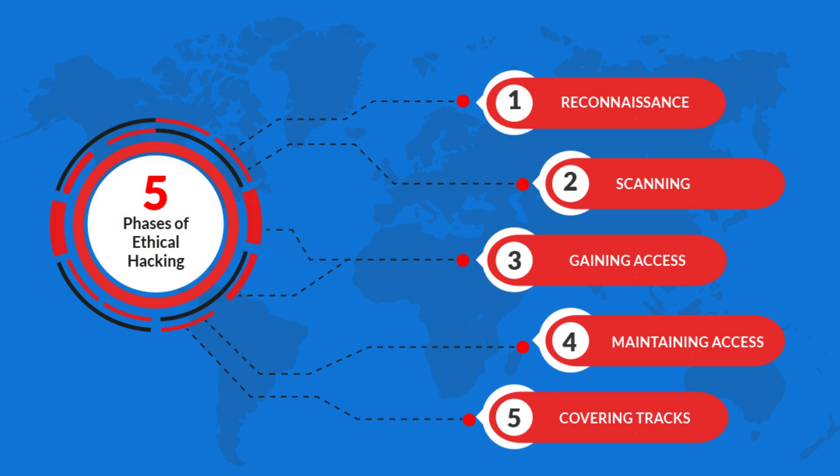Next is the scanning phase. During this stage, ethical hackers actively look for vulnerabilities in the system, such as open ports, weak passwords, or outdated software.